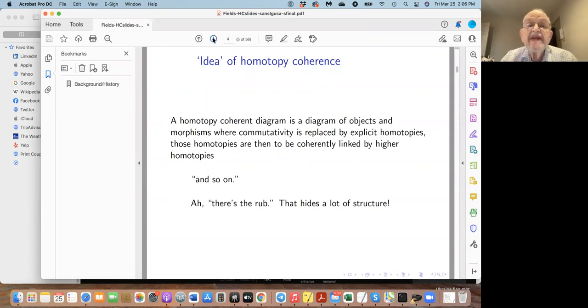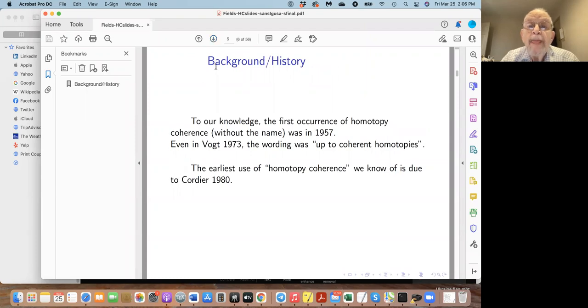Let's back up to where things started approximately. I would date it to 1957. Even in 1973, Vogt, as a spinoff from his work with Boardman on homotopy spaces, the wording was 'up to coherent homotopies.' The phrase 'homotopy coherence' as far as we know is due to Cordier in 1980. So it's a slow evolution.